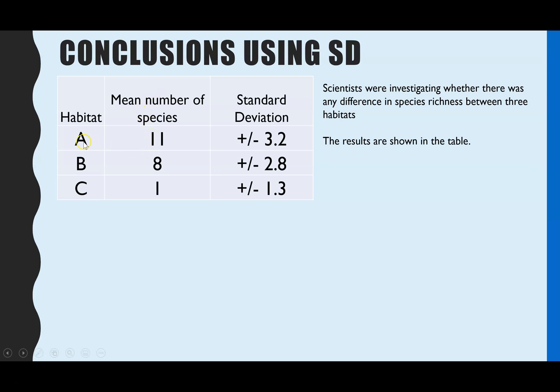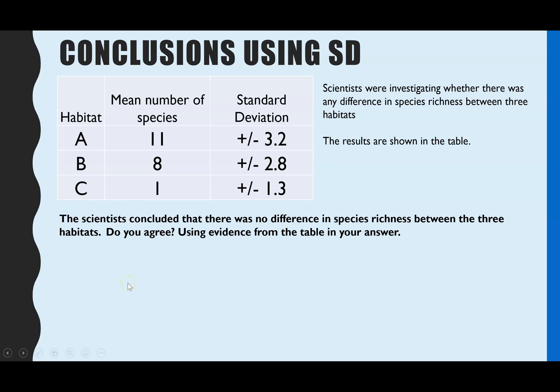So we have the results in the table. We have habitat A had 11, habitat B had 8 and C had 1. But they've also included the standard deviation. So this is the spread of the data around the mean. So it could be plus 3.2 from the mean, or minus 3.2 from the mean. So the question linked to it is, the scientists concluded that there was no difference in species richness or mean number of species in the habitat between those three habitats. Do you agree and use evidence?